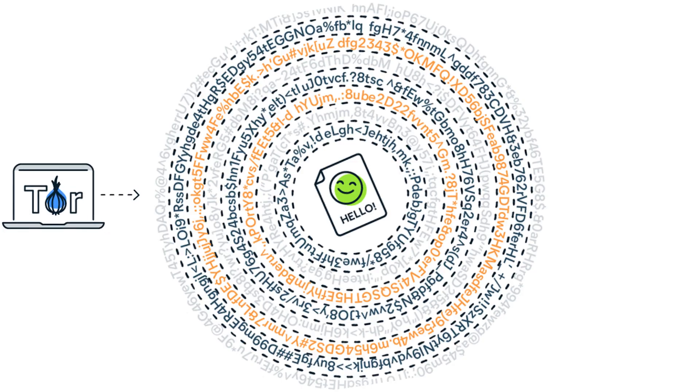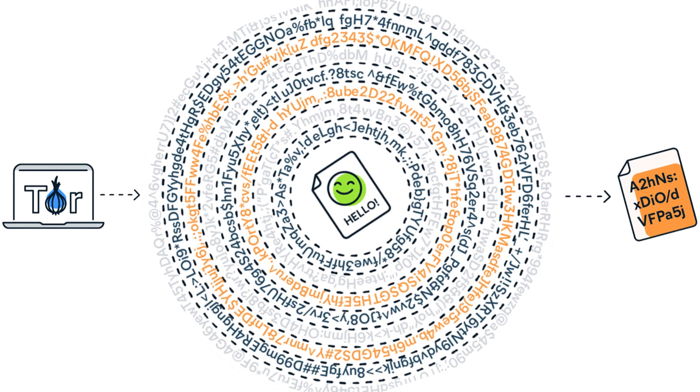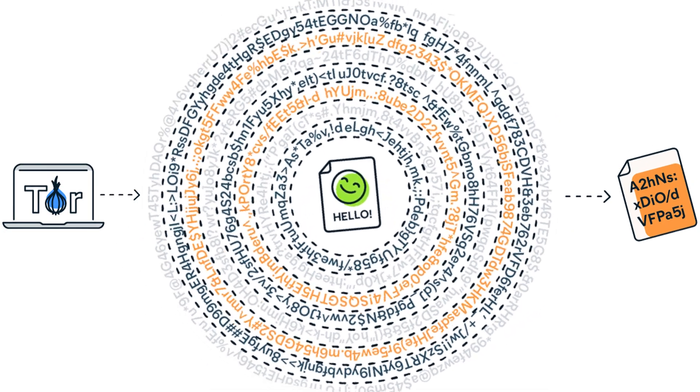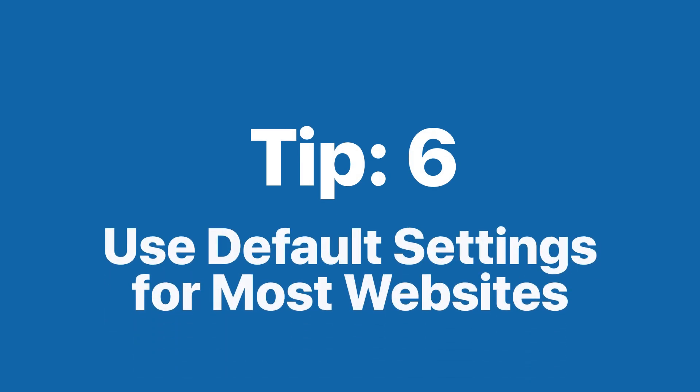Tor works by routing your internet traffic through multiple layers of encryption, making it incredibly difficult to trace back to you. Tor also anonymizes your browser fingerprint, so no matter how many times you visit a website it won't be able to build a consistent profile. Tor does come with some downsides like slower browsing speeds, but if anonymity is your top priority, Tor is an absolute must.